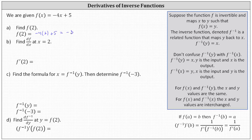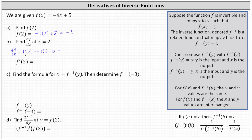Next, we're asked to determine df dx at x equals two. This is the same as determining f prime of two. Let's first determine df dx or f prime of x. df dx, which is the same as f prime of x, is equal to the derivative of negative four x plus five with respect to x, which is negative four times the derivative of x, which is one, plus the derivative of five, which is zero. So df dx or f prime of x is equal to the constant negative four.